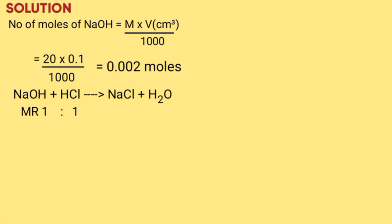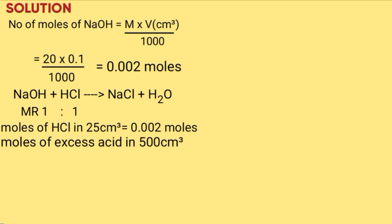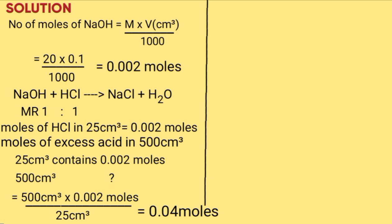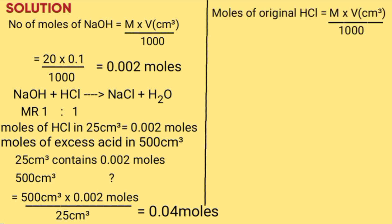From the mole ratio of 1 to 1, the moles of excess acid in 25 cm³ is 0.002 moles. The moles of excess acid in 500 cm³ is obtained as follows: 25 cm³ contains 0.002 moles — what about 500 cm³? Multiply: (0.002 × 500) / 25 = 0.04 moles. Moles of original hydrochloric acid = molarity × volume / 1000 = (80 × 1) / 1000 = 0.08 moles.